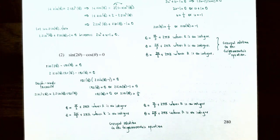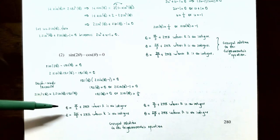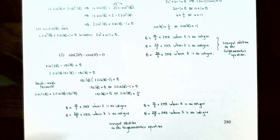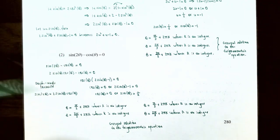Setting each factor equal to zero: cosine of theta equals zero or 2 sine theta minus 1 equals zero, giving sine of theta equals one-half. When cosine theta equals zero: theta equals pi over 2 plus 2pi·k or theta equals 3pi over 2 plus 2pi·k. When sine theta equals one-half: theta equals pi over 3 plus 2pi·k (quadrant 1) or theta equals 2pi over 3 plus 2pi·k (quadrant 2). Any of these four forms is the general solution.